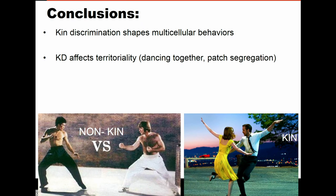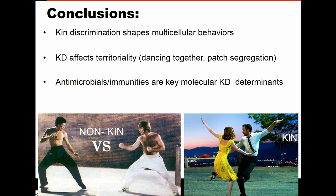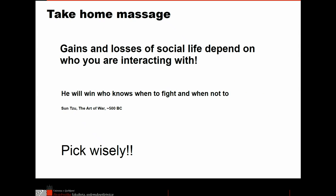In conclusion, the kin discrimination we discovered shapes multicellular behaviors: it shapes how strains coexist, how they swarm separately, and it affects territoriality. We believe that antimicrobial and immunity pairs — which must be the same in kin and are different in non-kin — are the main molecular determinants of kin discrimination in Bacillus. The take-home message: gains and losses of social life depend on who you are interacting with — so pick wisely. Thank you.